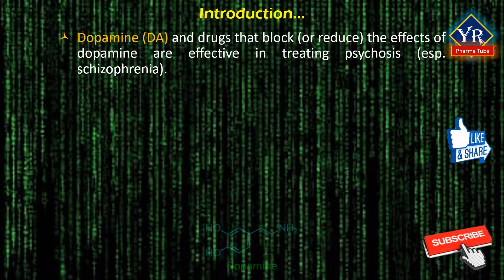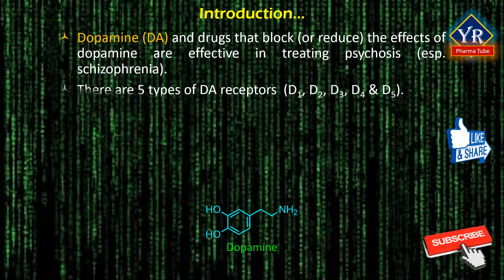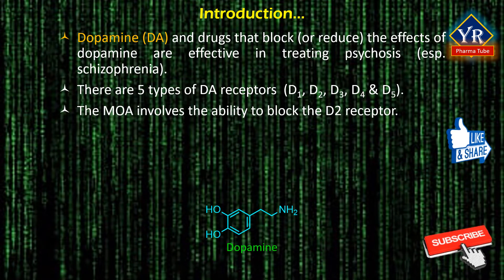Dopamine appears to be particularly important, and drugs that block or reduce the effects of dopamine are effective in treating psychosis, especially schizophrenia. There are at least five different types of dopamine receptors identified as D1, D2, D3, D4, and D5. However, the mechanism of action of antipsychotic drugs involves the ability of these drugs to block a specific dopamine receptor, particularly the D2 receptor.